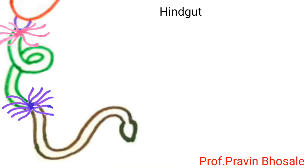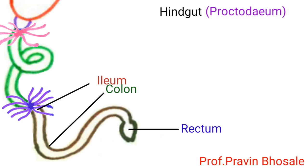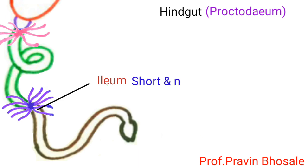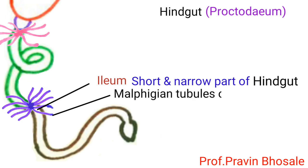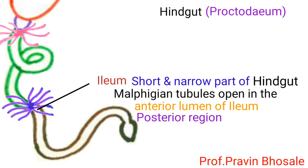Hepatic caeca are thin, transparent, short, blind (closed) and hollow tubules. Their function is to secrete digestive enzymes. Hindgut, that is proctodeum, consists of ileum, colon, and rectum. Ileum is a short and narrow part of the hindgut.